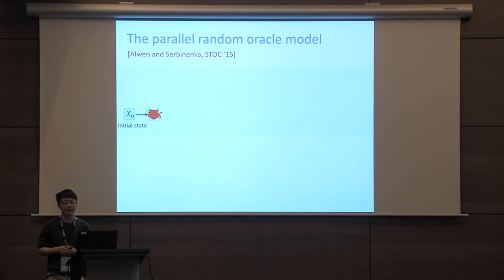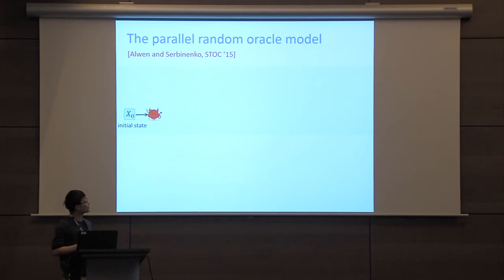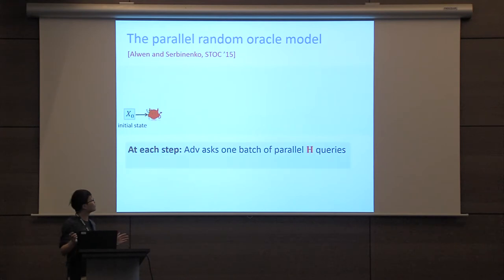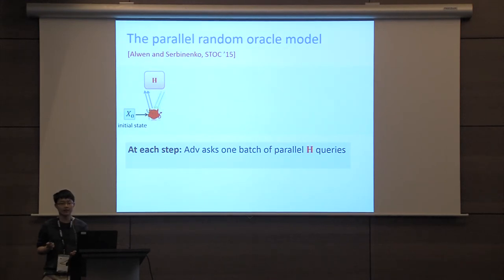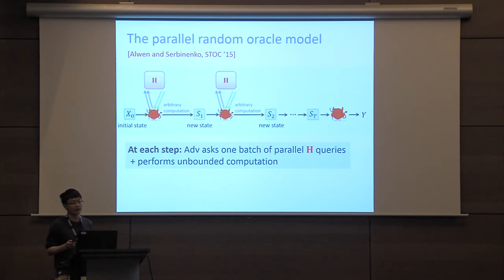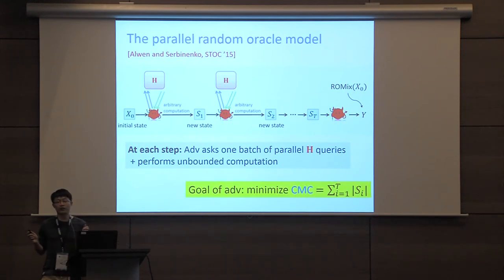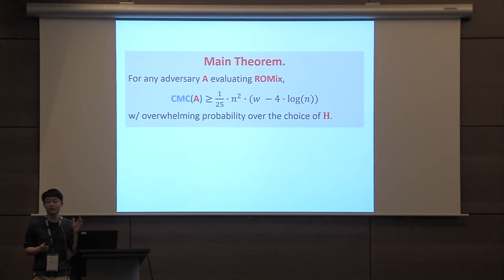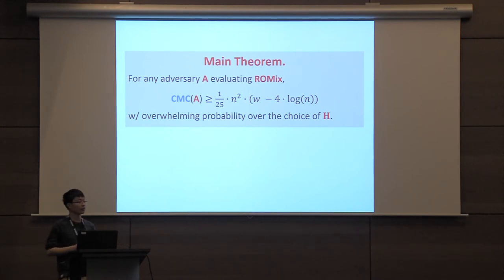To formalize the computation of RawMix by an adversarial strategy we use the parallel random oracle model proposed by Alvin and Shabalinski at STOC 2015. The adversary first gets the initial input state x0. At each step the adversary asks one batch of parallel queries to oracle H, and after receiving the answers it can perform unbounded computation and update the old state into new memory state S_i. Finally it produces the output meant to be the output of RawMix on input x0. The adversary's goal is to minimize CMC, the sum of state size over time.